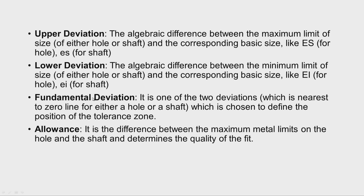The next term is fundamental deviation. It is one of the two deviations which is nearest to the zero line for either a hole or a shaft, and it is chosen to define the position of the tolerance zone. We also have the term allowance — it is the difference between the maximum metal limits on the hole and the shaft, and this determines the quality of the fit.